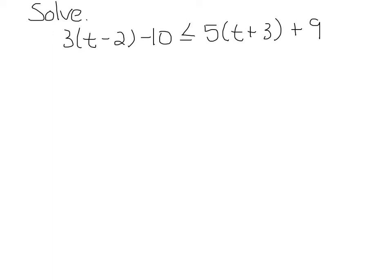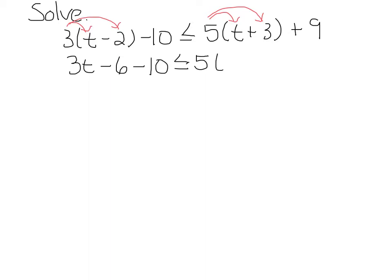So if this were an equation, the first thing you'd want to do is simplify by distributing the 3 here and the 5 here. You want to get rid of those parentheses. So this is 3t minus 6 minus 10 less than or equal to 5t plus 15 plus 9.